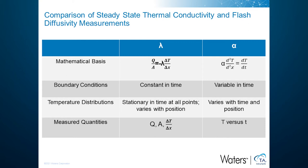In the steady-state method, thermal conductivity is directly involved so it can be determined directly, and time is not a variable. This gives the steady-state method an advantage for measuring heterogeneous materials with low and medium conductivity. The effective thermal conductivity can be determined from the temperature drop across the sample. By contrast, in the transient flash method, thermal diffusivity rather than thermal conductivity is involved and time is a variable. Second, the boundary conditions associated with heat loss are different: in the steady-state method they must be constant versus time, while in the laser flash diffusivity method they change versus time.